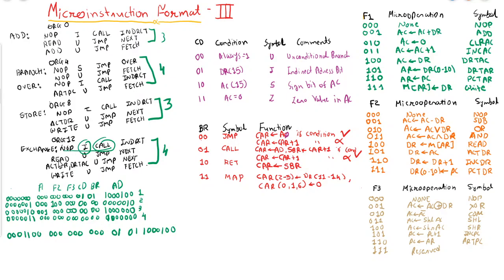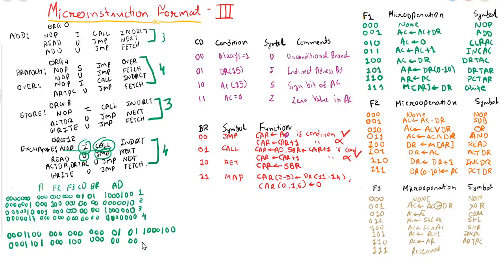Next is READ. READ belongs to field 2. READ in field 2 is 100. The next address will be 13. There is no operation in field 1 so 000; in field 2 it will be 100; in field 3 it will be 000. Next is unconditional jump, so for unconditional it is 00, for jump it is 00, and the next address will be 14.